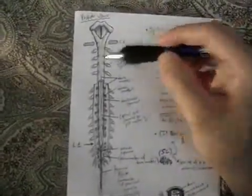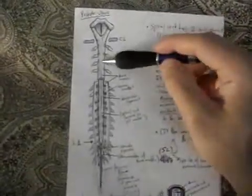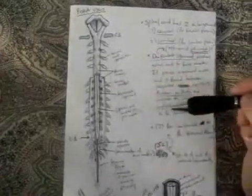There are also, like the vertebral column, four parts to the spinal cord: cervical, thoracic, lumbar, and sacrococcygeal.